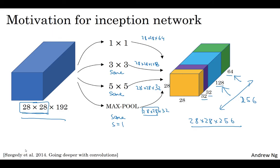This is the heart of the inception network, which is due to Christian Szegedy, Wei Liu, Yangqing Jia, Pierre Sermanet, Scott Reed, Dragomir Anguelov, Dumitru Erhan, Vincent Vanhoucke, and Andrew Rabinovich. The basic idea is that instead of you needing to pick what filter sizes or pooling you want and committing to that, you can do them all and just concatenate all the outputs, and then let the network learn whatever parameters it wants to use whatever combinations of these filter sizes it wants.